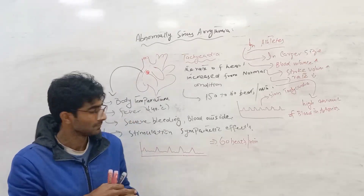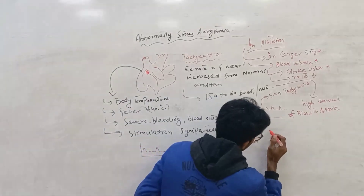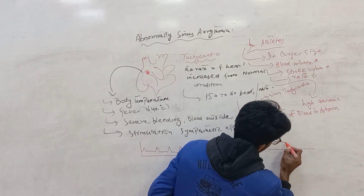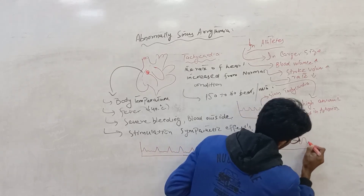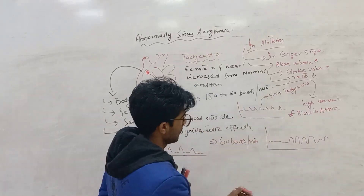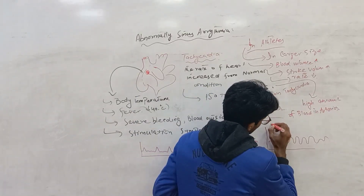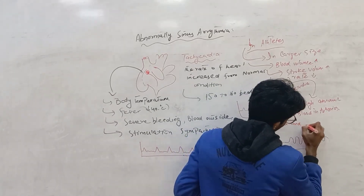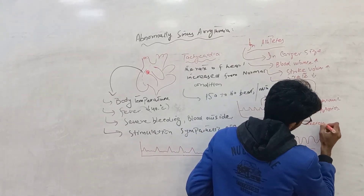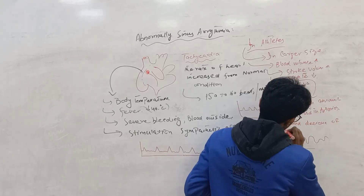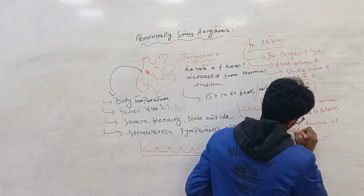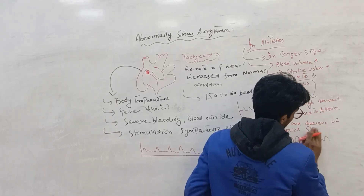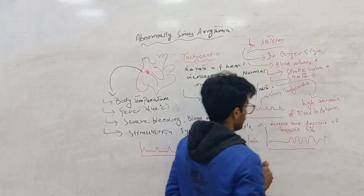During sinus arrhythmia, there is mostly an increase and decrease of impulse — approximately 5%. This is an important point about sinus arrhythmia.